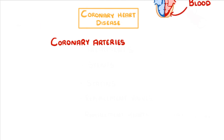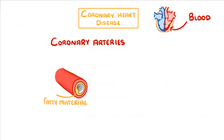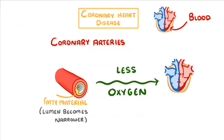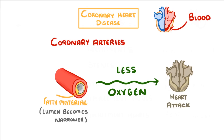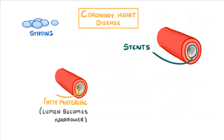Coronary heart disease is when the coronary arteries, which supply blood to the heart muscle, start to get blocked by the build-up of layers of fatty material. This causes the lumen of the arteries to become narrower so that less blood can flow through, which means that less oxygen reaches the heart muscle. As the heart needs lots of oxygen to keep working, this can put strain on the heart and potentially cause a heart attack.